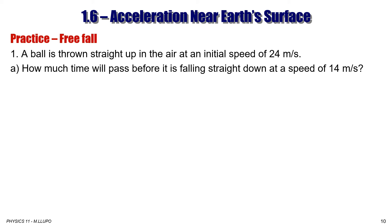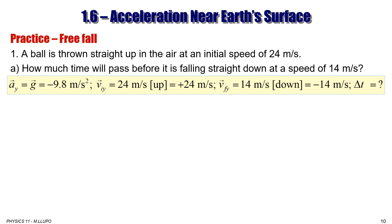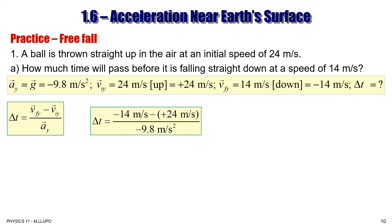Here is a practice problem using free fall. A ball is thrown straight up in the air at an initial speed of 24 m/s. How much time will pass before it is falling straight down at a speed of 14 m/s? Given: a_y = −9.8 m/s², V_iy = +24 m/s, V_fy = −14 m/s. Using Δt = (V_fy − V_iy) / a_y, and since everything is in standard units, we find time equals 3.88 seconds.